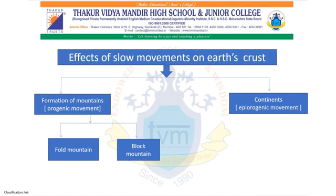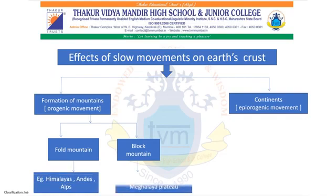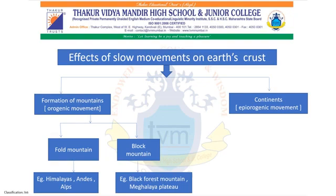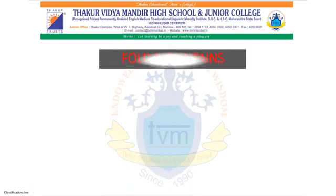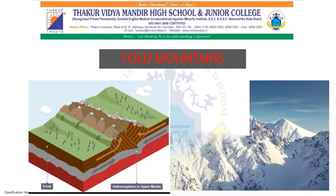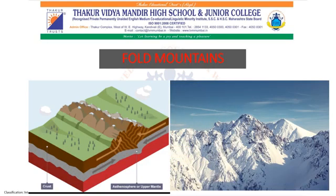In mountains, there are two different types: fold mountains and block mountains. Fold mountains are formed when energy movement in the interior of the earth subjects soft rocks to compression, and as a result, wrinkles or folds are developed — a process called folding. For example, the Himalayan mountain range is an example of a fold mountain. In the given figures, we can see how energy waves coming towards each other cause the earth's crust to rise, with the soft rocks compressed and large acute folds formed.